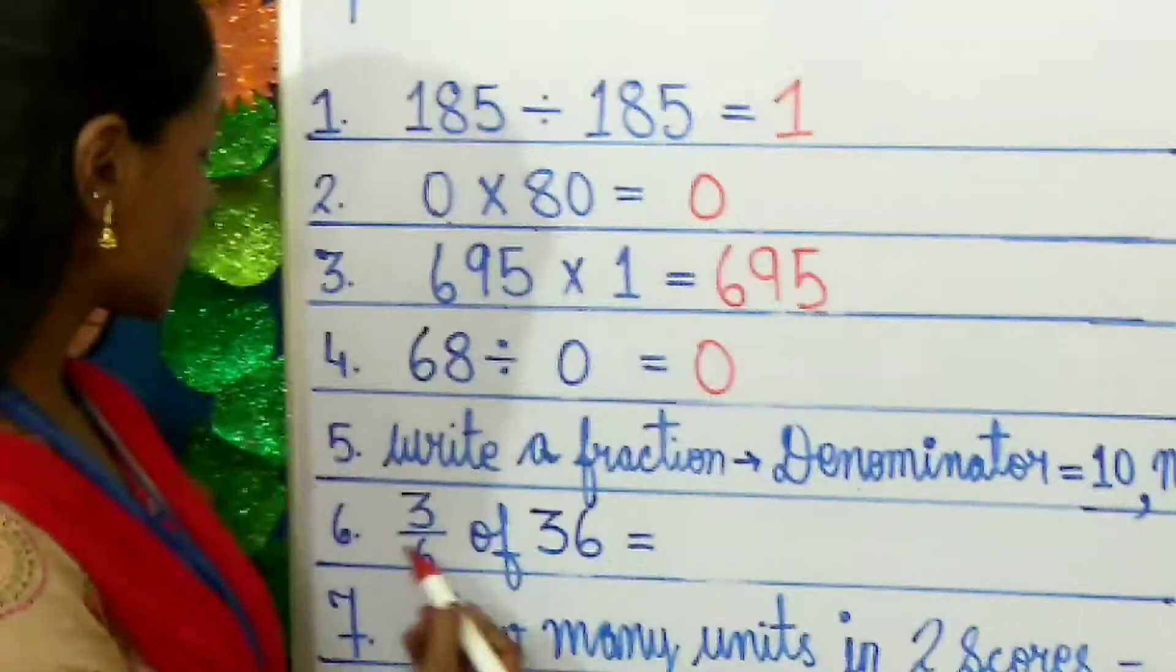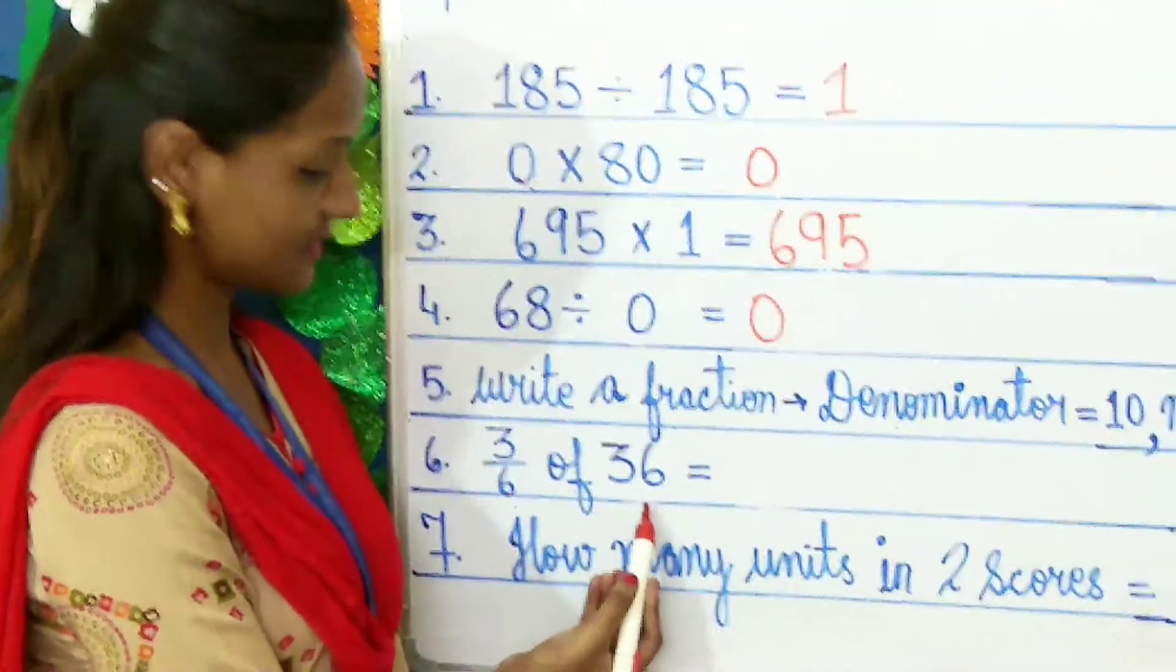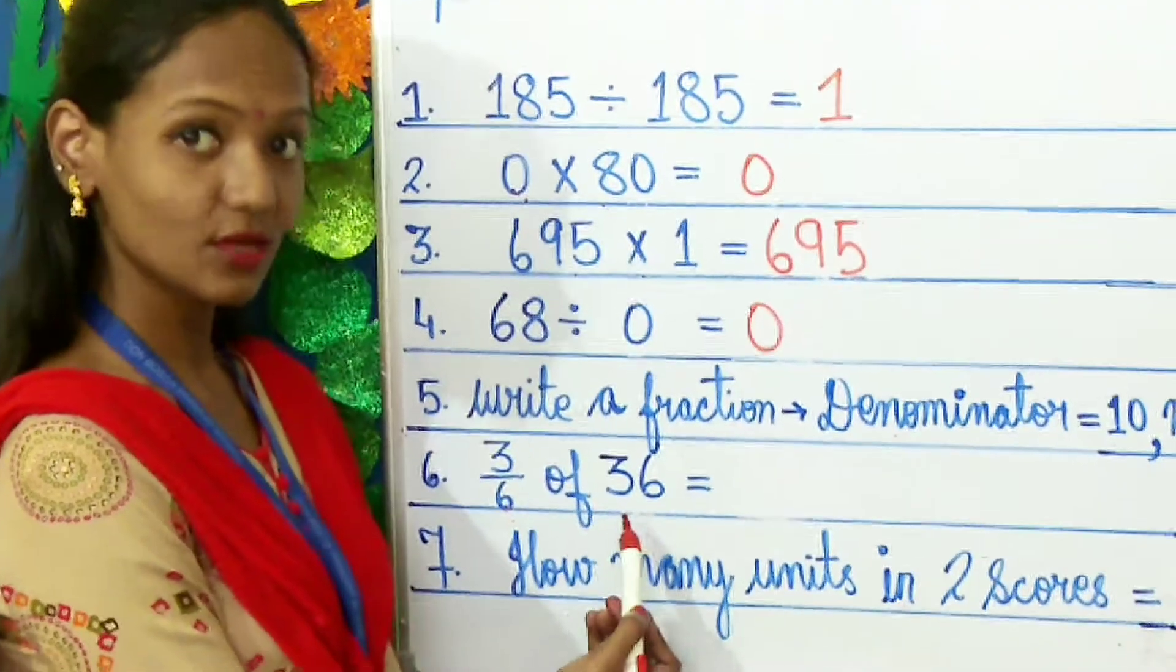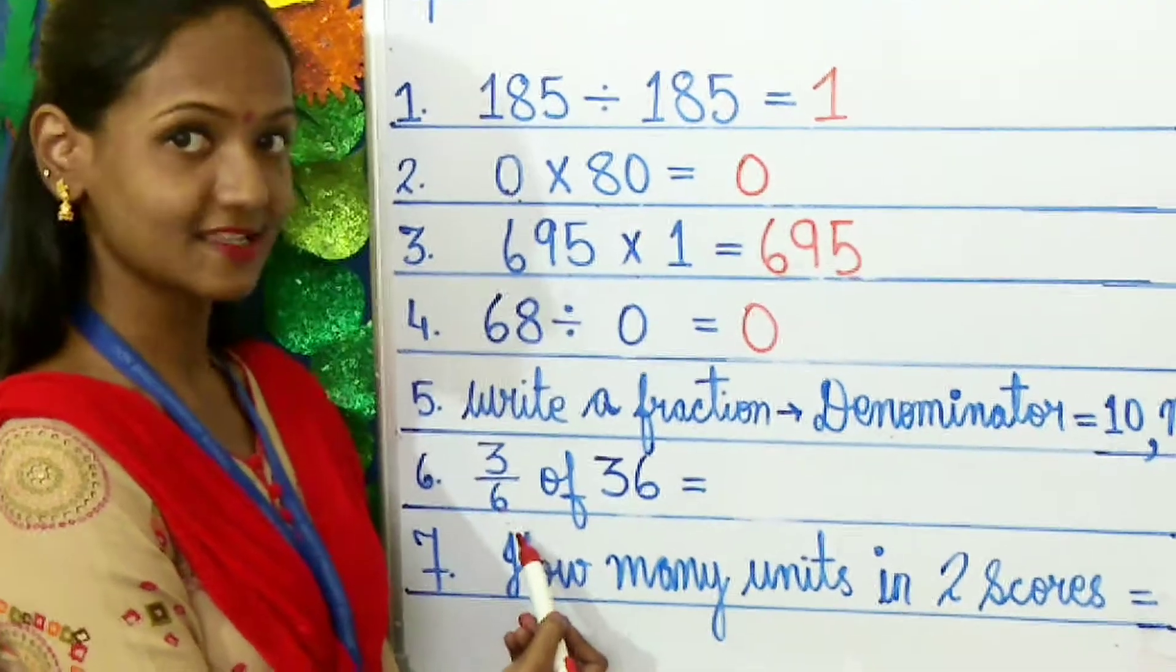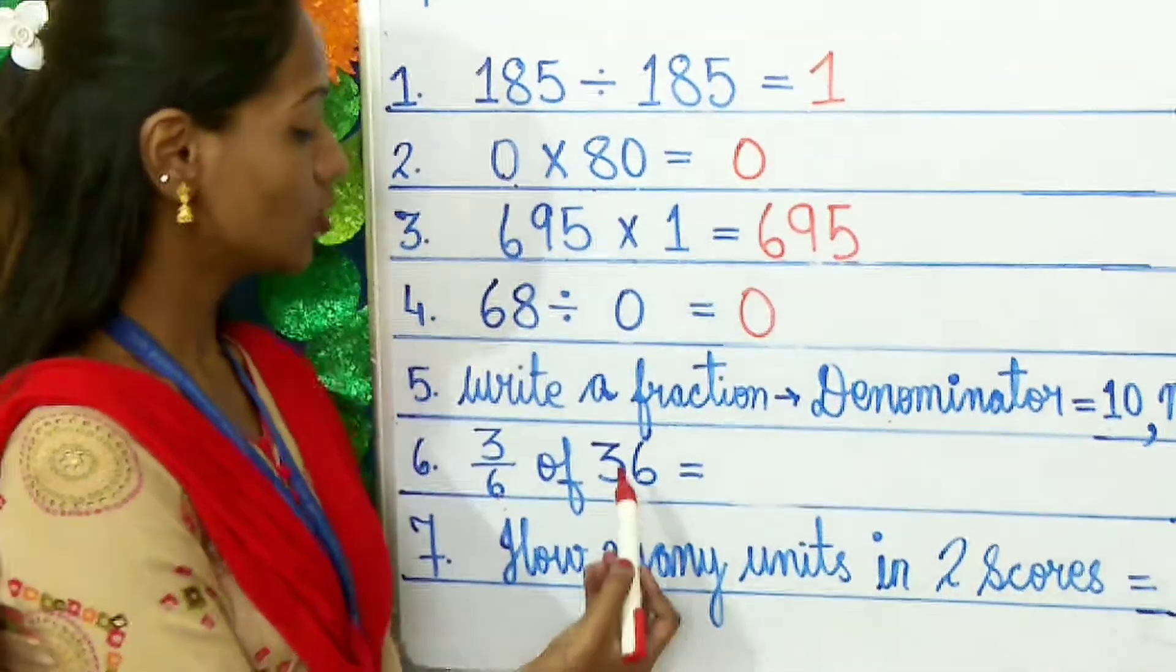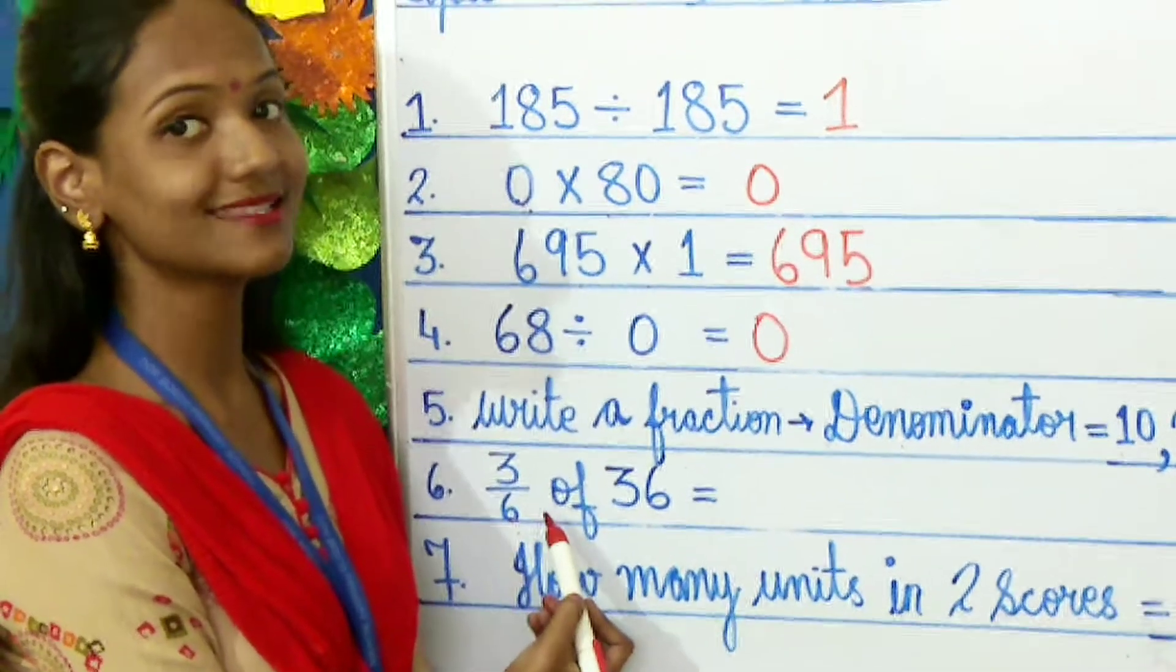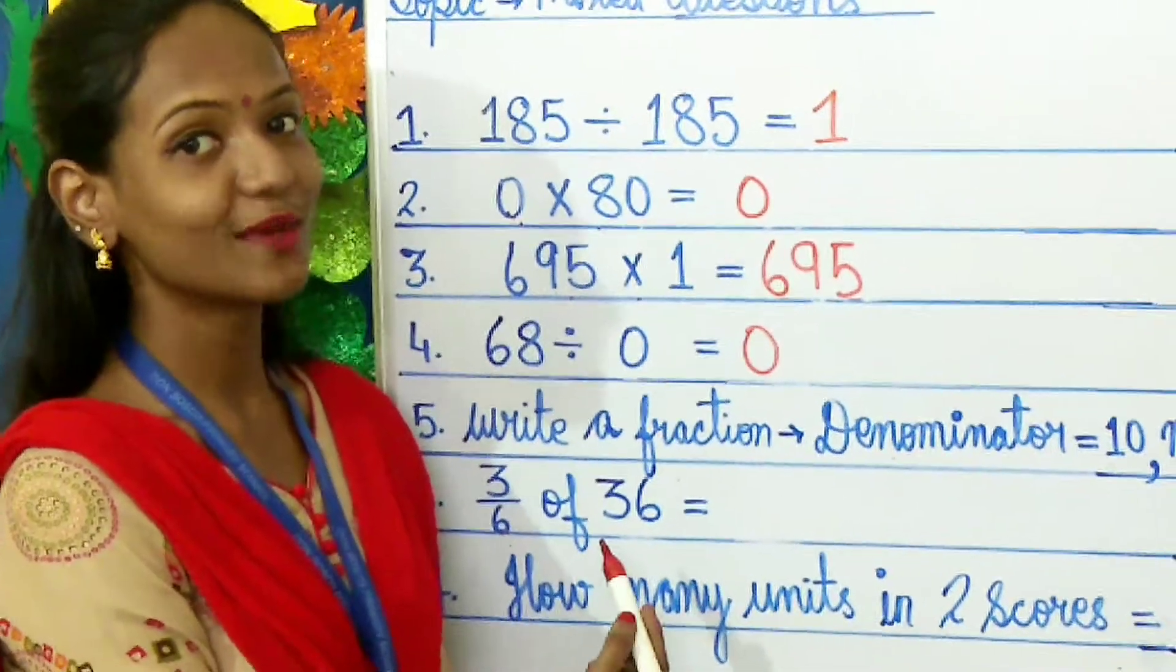3 by 6 of 36. Here you need to divide this number 36 with the denominator. So, 36 divided by 6. You will be getting 6. Then the next step, you need to multiply this 6 with the numerator, that is 3. So, 6 multiplied by 3. Your answer will be 18.